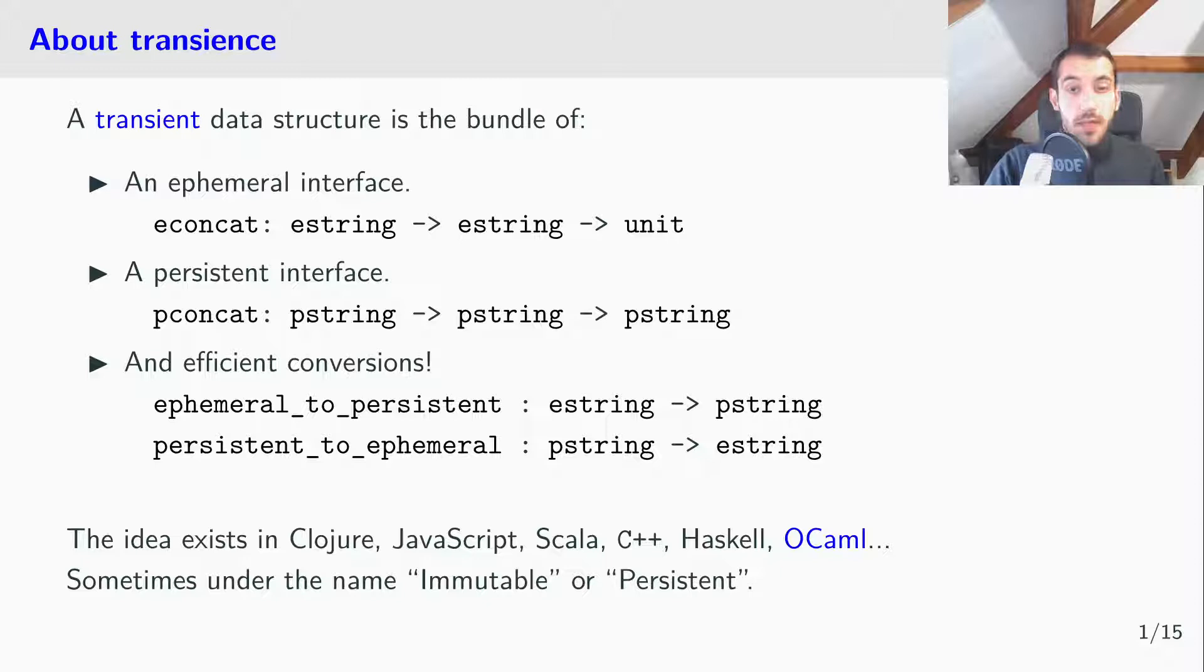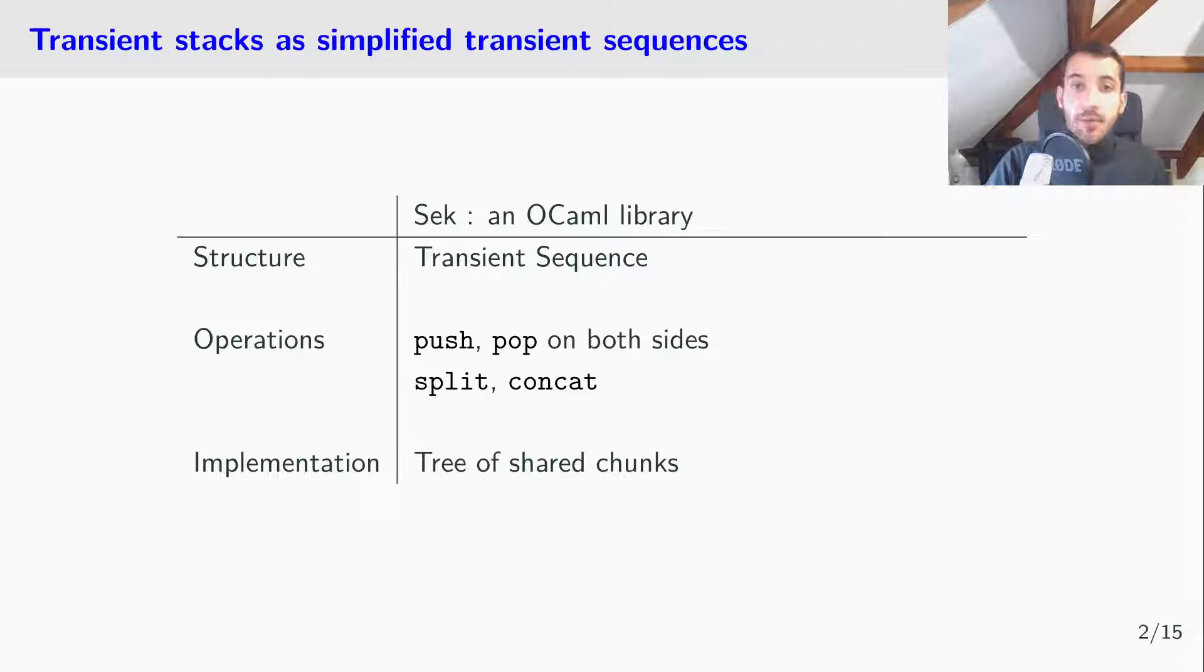Sec is an optimal library for transient sequences, that is push and pop on both sides, split and concat, and Sec is implemented using a tree of shared chunks. A chunk is just a fixed capacity array and we share these chunks between different instances of a structure to ensure efficiency.